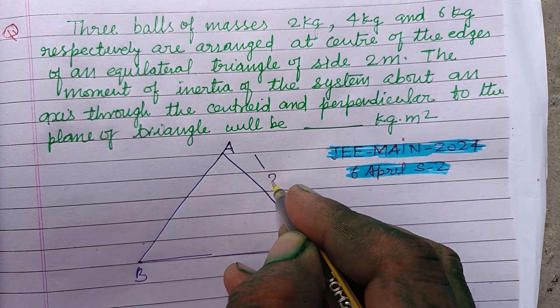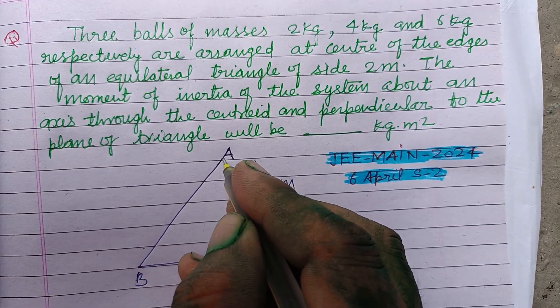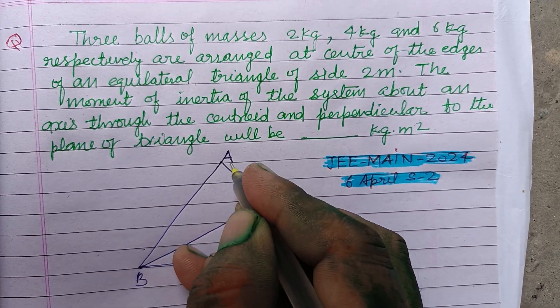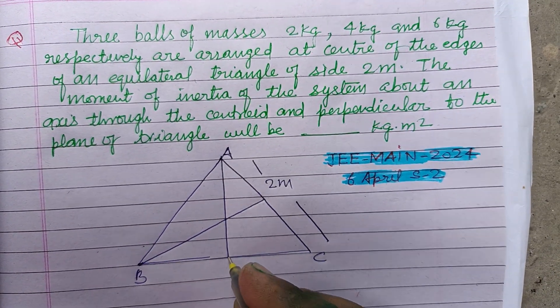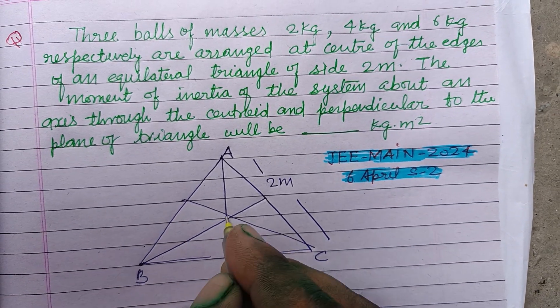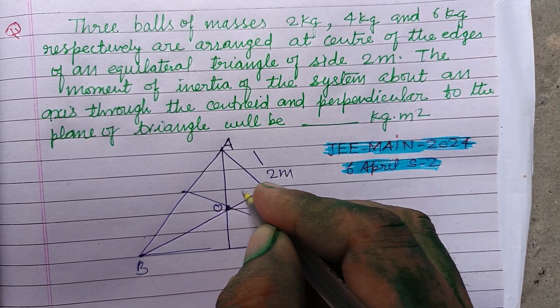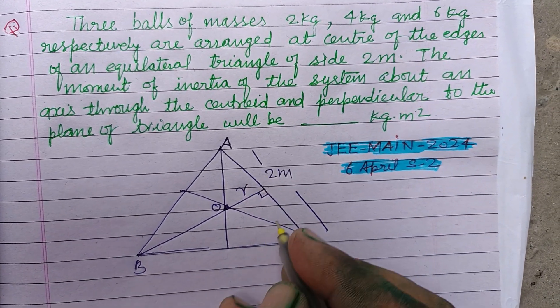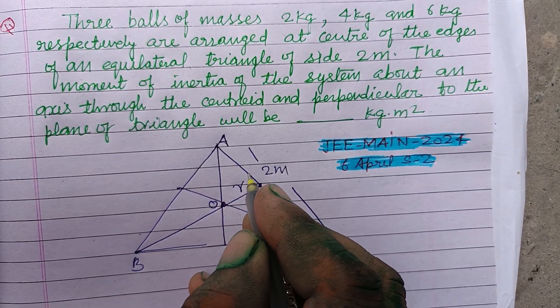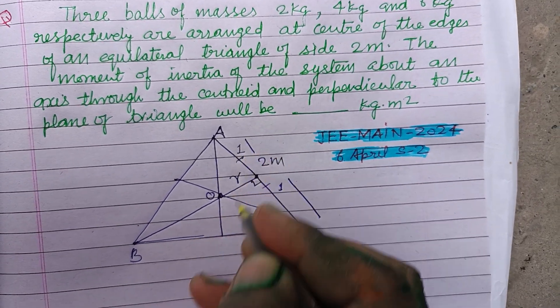Its side is 2 meter and this is the centroid. Let it be O and this distance, this is perpendicular R. Since it is a right angle triangle, it is divided into two equal parts. This is 1 meter and this is 1 meter.